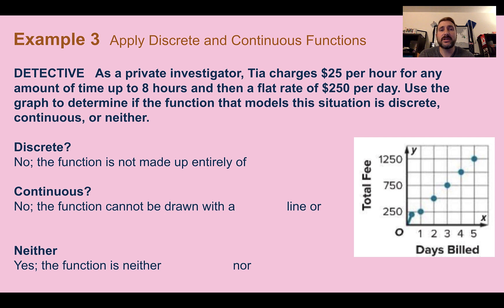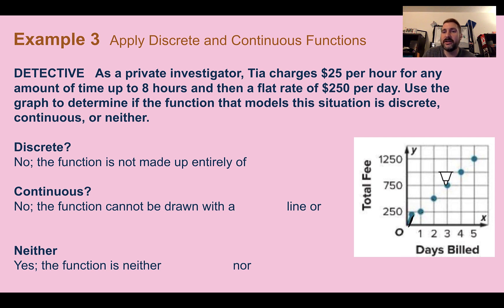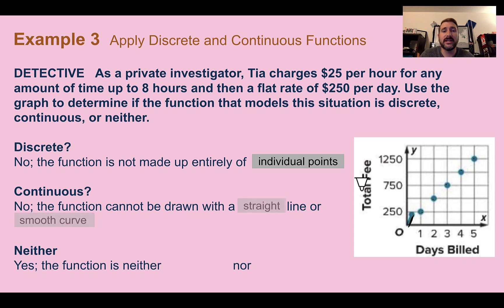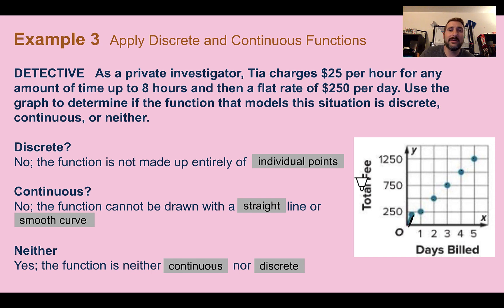Example three: apply discrete and continuous functions. As a private investigator, Tia charges $25 per hour for any amount of time up to eight hours, and then a flat rate of $250 per day. Use the graph to determine if the function is discrete, continuous, or neither. Looking at the graph, we have a section that's part of a line, and then dots afterward. Is it discrete? No, it's not only made of individual points. Is it continuous? No, it's not drawn with a straight line or smooth curve. So it is neither — it is made up of both parts of lines and points.